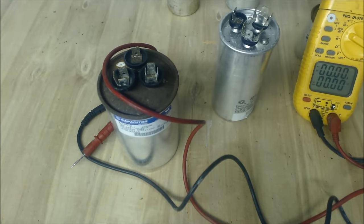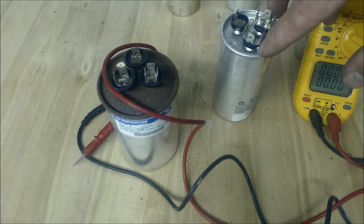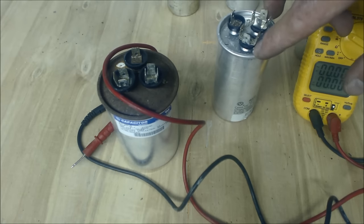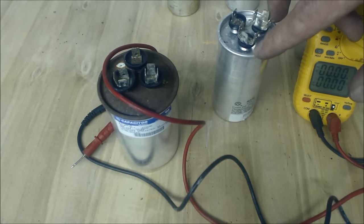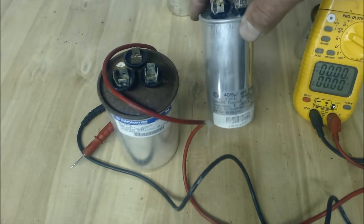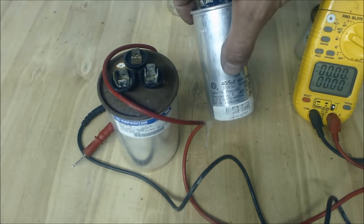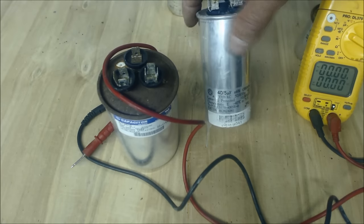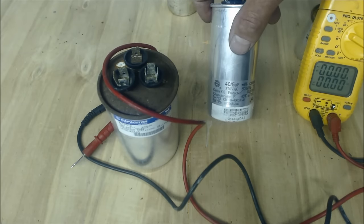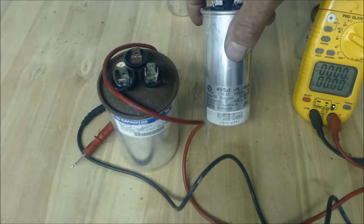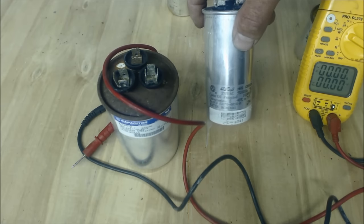You're going to replace this with another dual run capacitor that is 40 plus 5 microfarad, or you can replace it with a single capacitor that's 40 microfarad and then another single capacitor that's 5 microfarad. Five meaning for the fan and 40 for the hermetically sealed compressor.